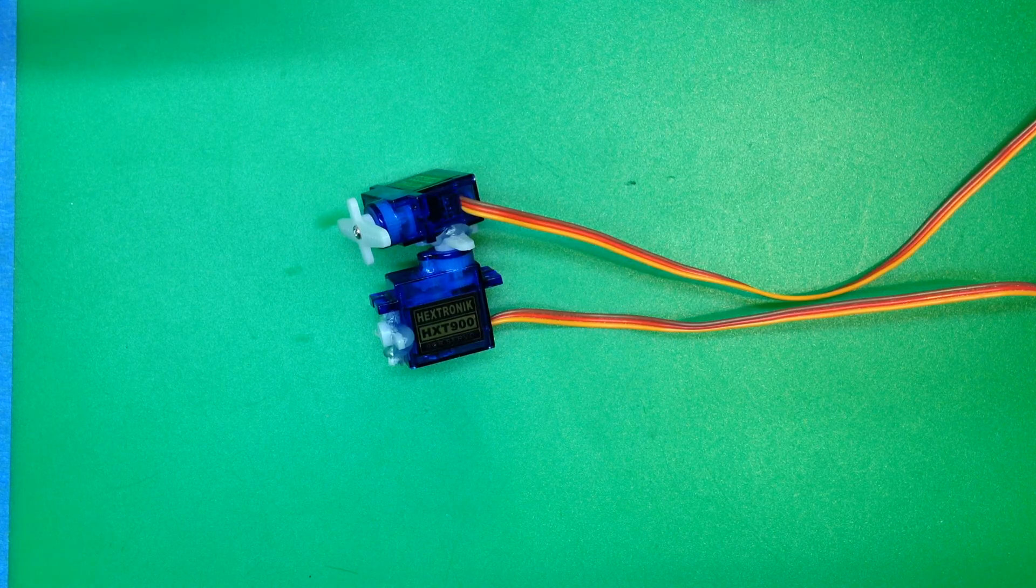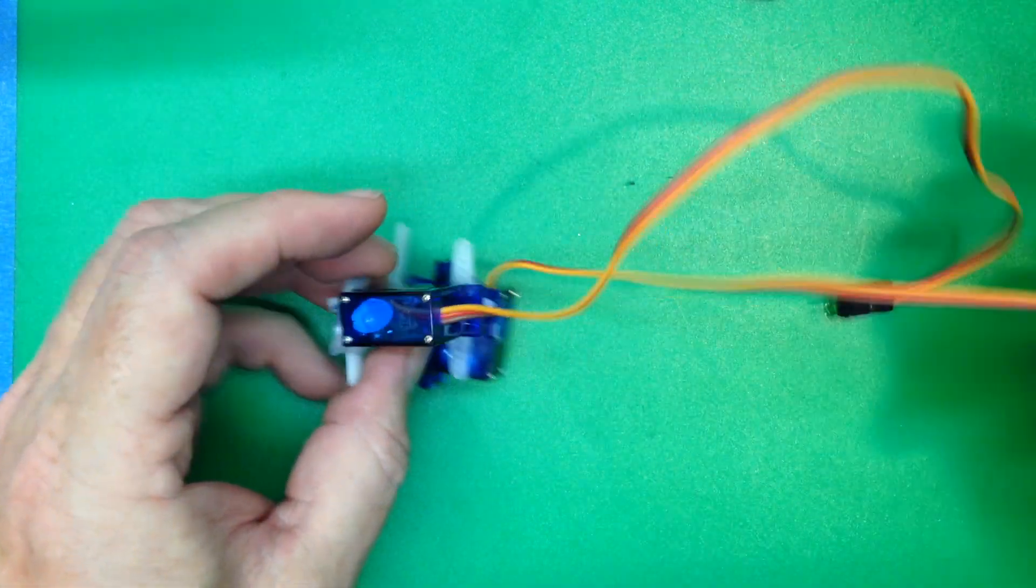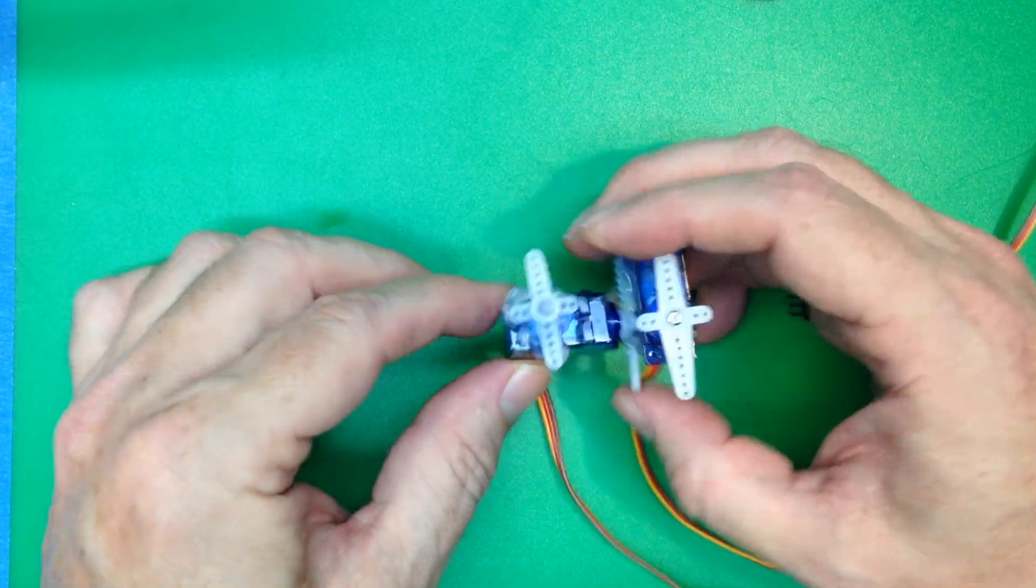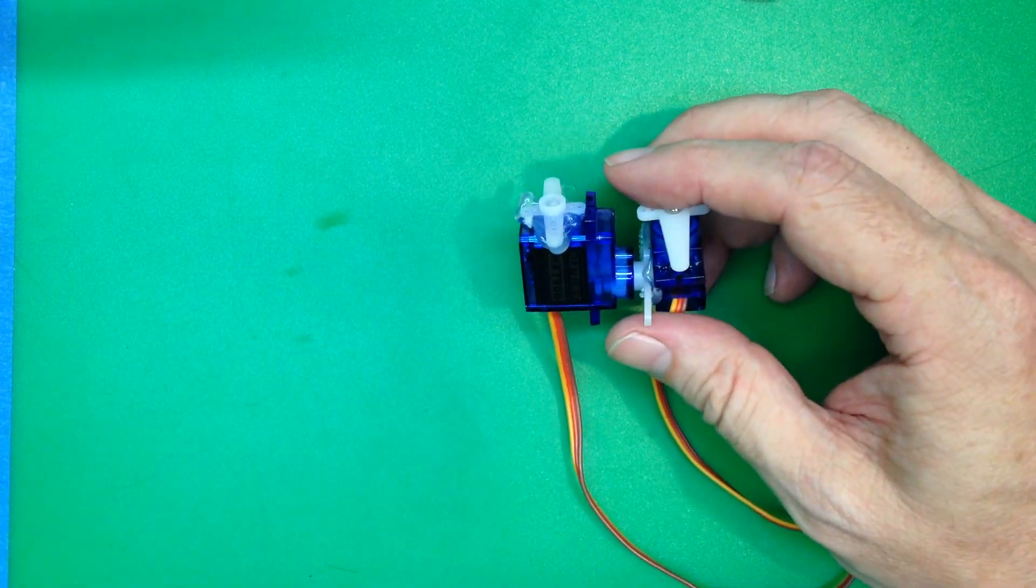Okay, here's how to undo hot glue with alcohol. Here's a couple of old servos that I had hot glued onto something for a project. You can see there's a servo arm glued here and a servo arm glued here.